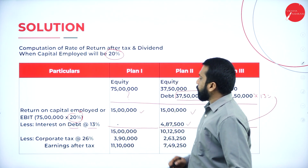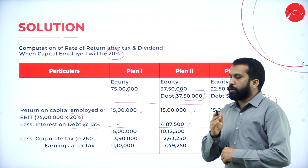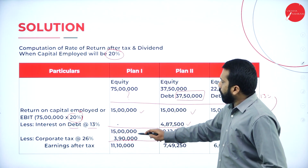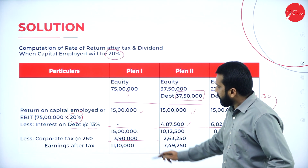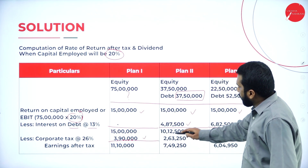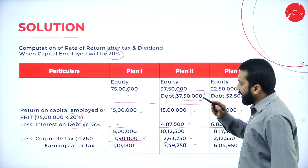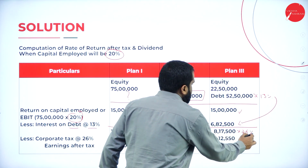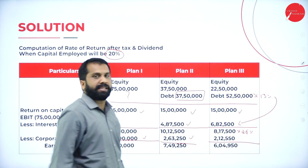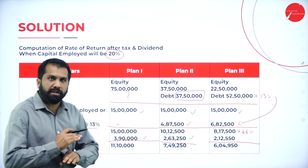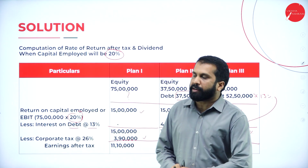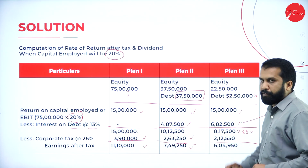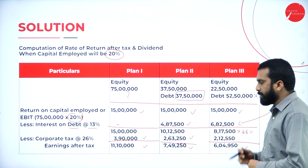After that, less corporate tax at 26%. On 15 lakh, 26% is 3,90,000. For Option 2, the reduced profit at 26% gives 2,63,000. For Option 3, 8,17,500 at 26% gives 2,12,550. So earnings after tax are 11,10,000; 7,49,000; and 6,04,950 respectively.